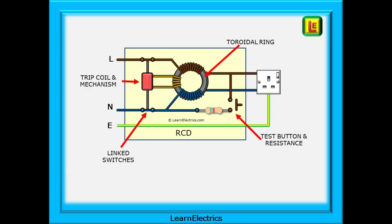These are the basic parts of a general purpose RCD. The input current flows along the line conductor and around a magnetic toroidal core, then to the points of use — a socket outlet in this case. The neutral currents that flow back also pass around the toroid, but wound the opposite way to the line. If input and output are the same, they cancel each other out with a net residual current of zero, and the RCD does nothing.